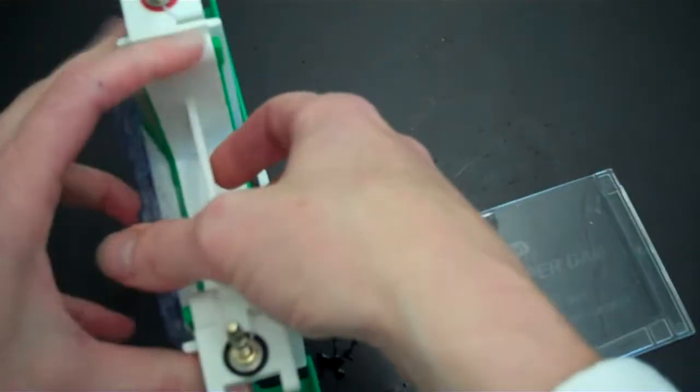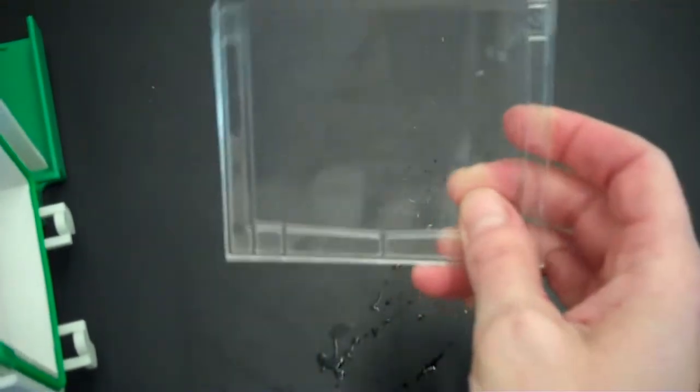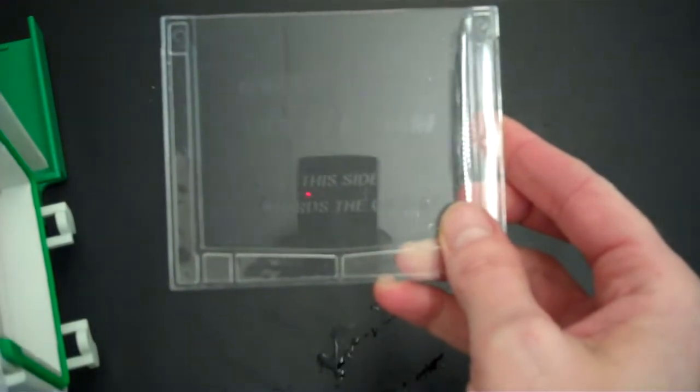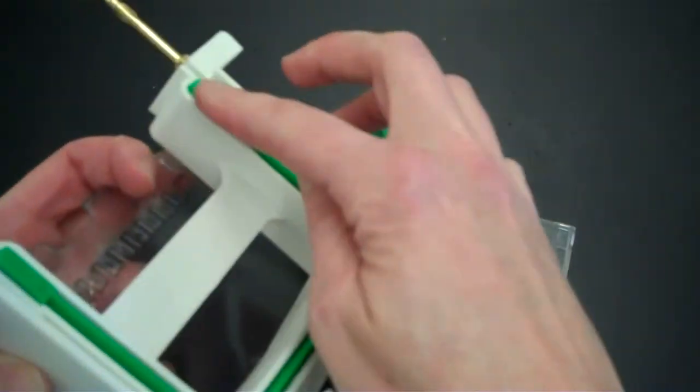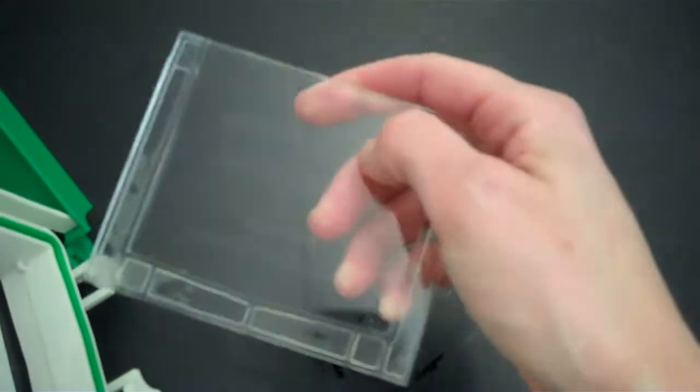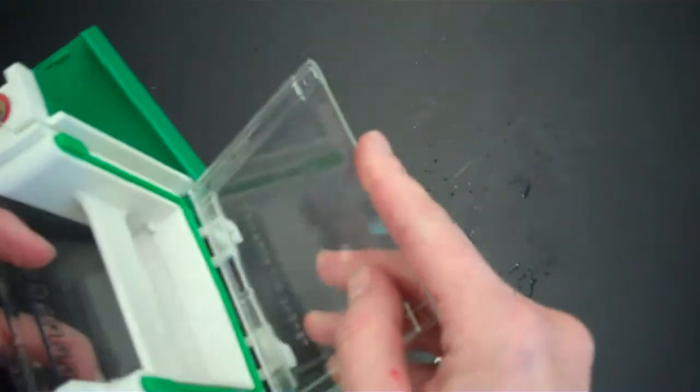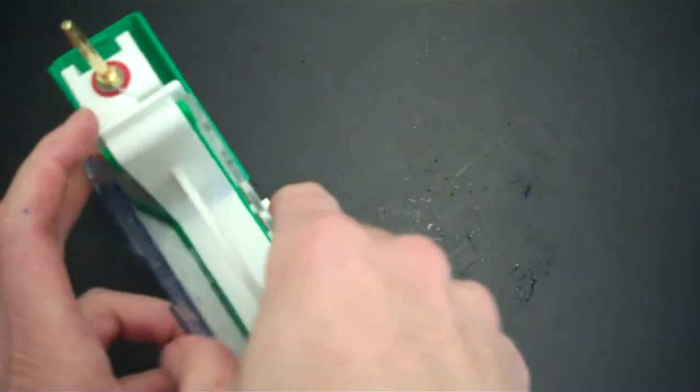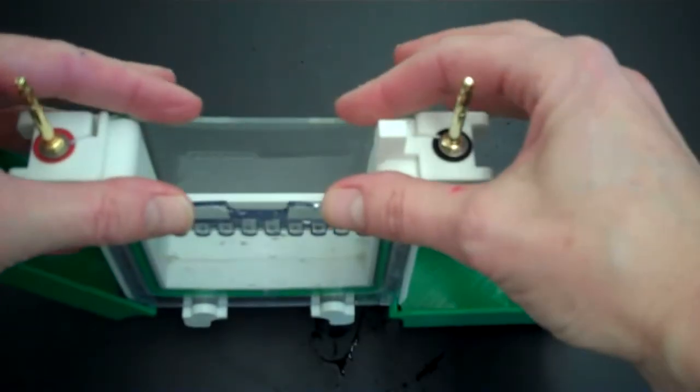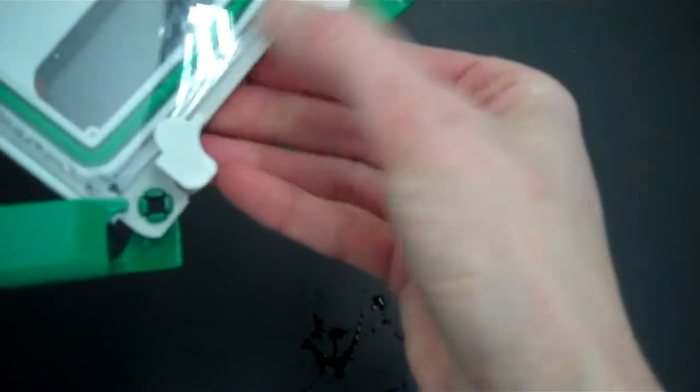Then the next thing that you're going to do is take your buffer dam. And if you read on here, it says buffer dam, this side toward the gasket. The gasket is this green rubber thing right here. So you're going to take that side that you can read and put it towards the gasket.